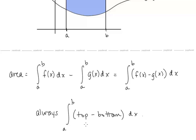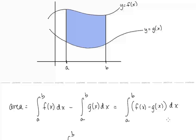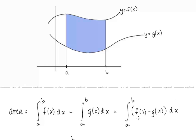It's always going to be the top function minus the bottom function that we're integrating. The integral of f of x minus g of x from a to b really uses the approximating rectangle, whose height is f of x minus g of x — the difference in length — multiplied by the width delta x, which becomes dx in the integral.